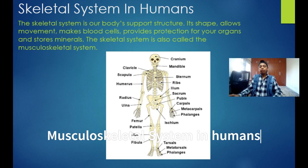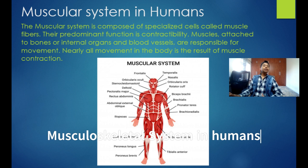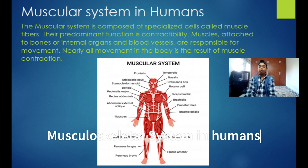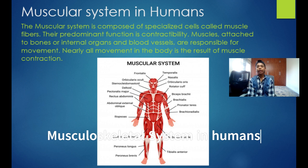Moving towards the muscular system: it is composed of specialized cells known as muscle fibers. Its main function is muscle contractibility. Muscles are attached to blood vessels, body organs, internal organs, and even bones, and they are responsible for movement. Nearly all movement in the body is the result of muscle contraction.